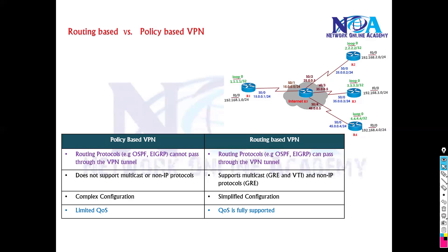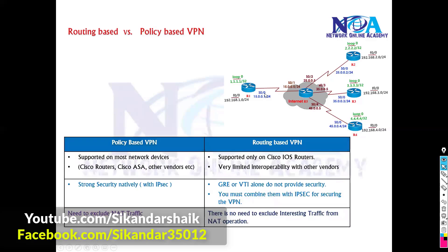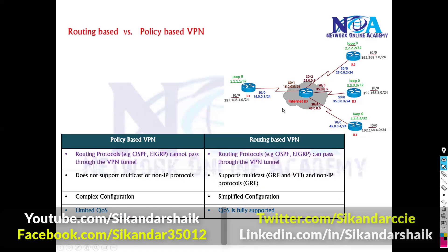Most of the time we prefer to go with routing-based VPNs, except when using firewalls — if you are using firewalls you may need to go with policy-based VPNs. But in terms of Cisco IOS, we always prefer routing-based VPNs because of the many benefits we get, as there are plenty of differences and advantages compared to normal IPsec VPNs.